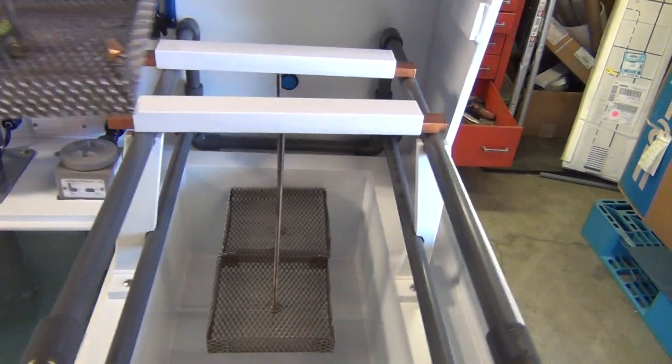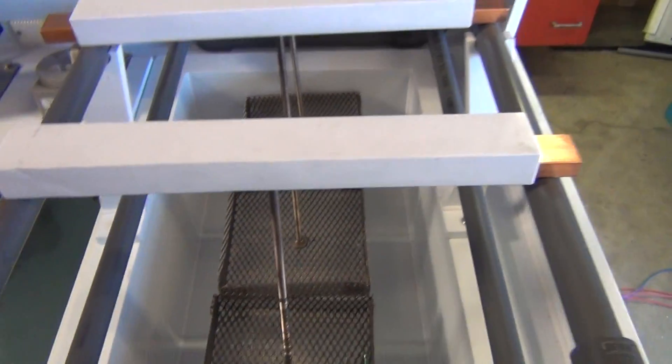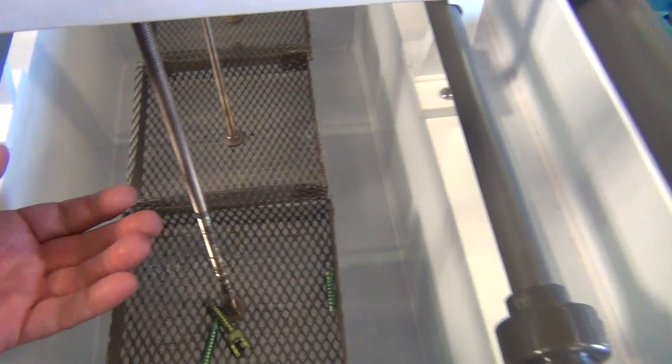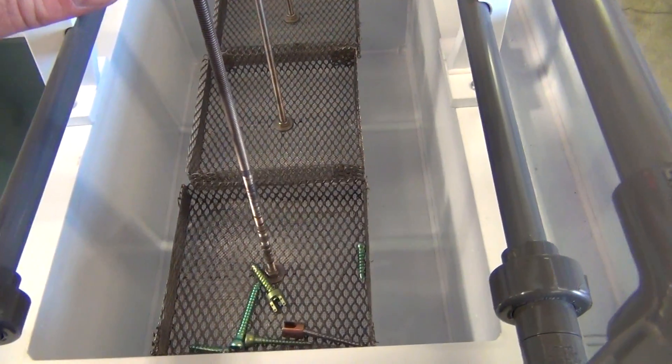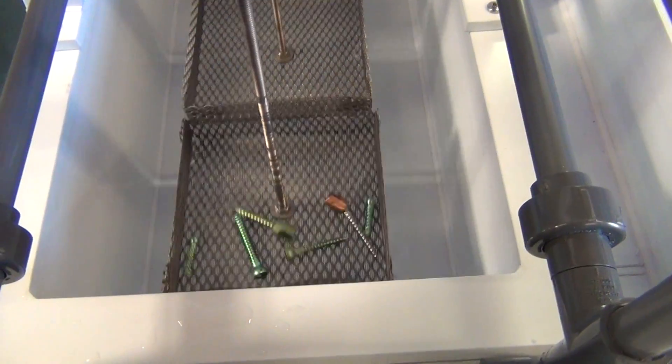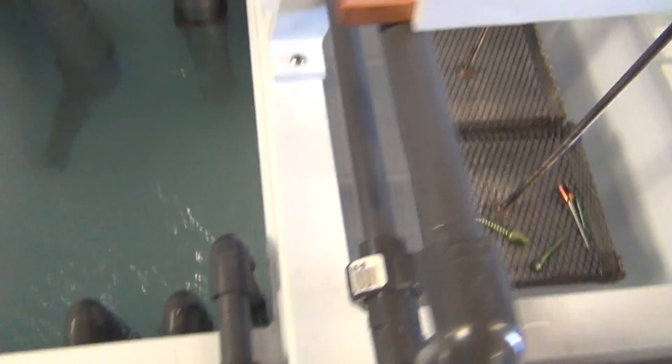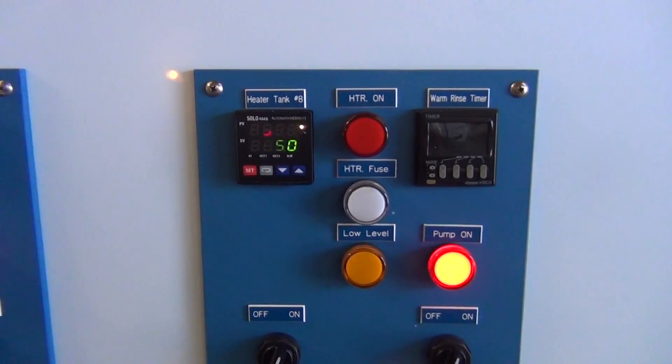This system also has a drying station. It allows the parts a place to drip. We also have an air curtain here using some of that low pressure air, and we're actually pushing air across the parts to help them dry more quickly. The air is actually coming from a heated tank, a 130 degree tank.